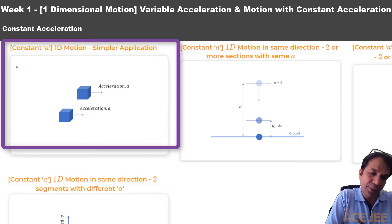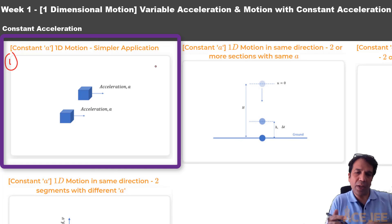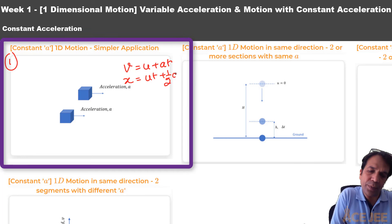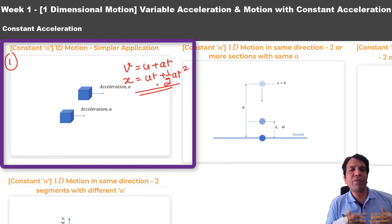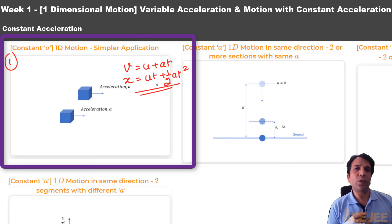In the first question type under constant acceleration, we will simply learn to apply v equals u plus at and displacement x equals ut plus half at squared to determine the unknown. These will be fairly straightforward questions, though I recommend listening to the question type and looking at the sample problems discussed.